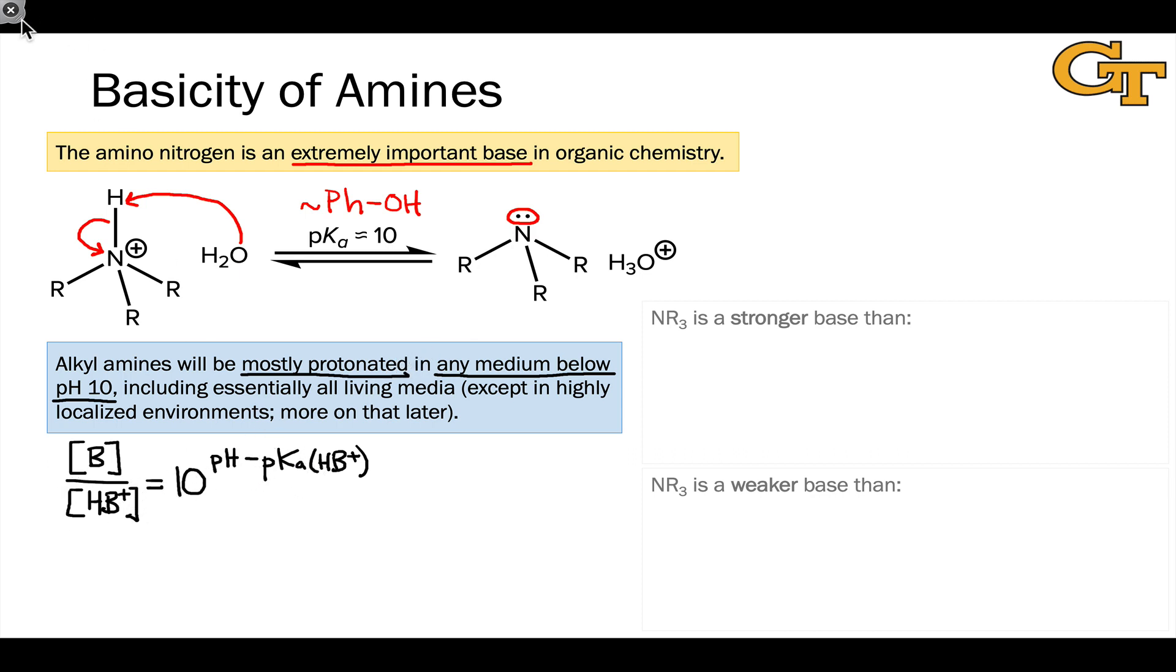That falls out of the math if we plug in, let's just say, 10 for the hypothetical pKa of HB plus. Any pH value less than 10 is going to make this exponent negative and make this side of the equation less than 1, meaning HB plus concentration is greater than B concentration. So the conjugate acid, the ammonium, dominates over the free neutral amine.